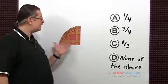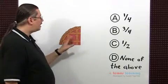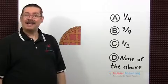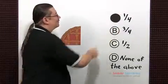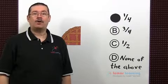So what fraction of the pie is left? We have one out of the four slices. So the answer is choice A, one-fourth or one-quarter.